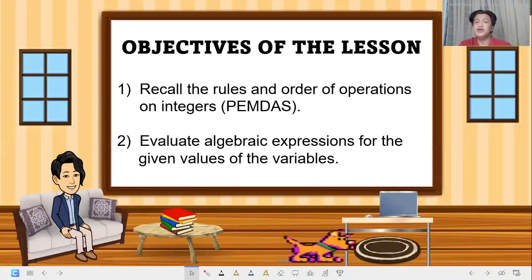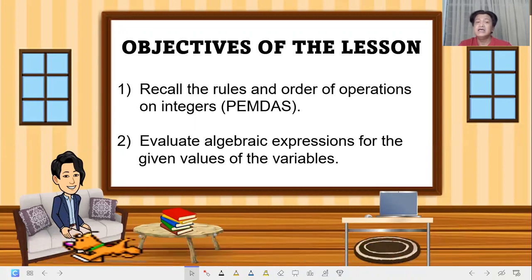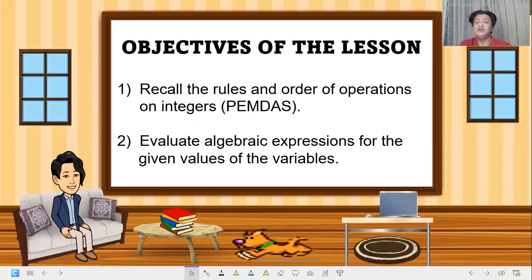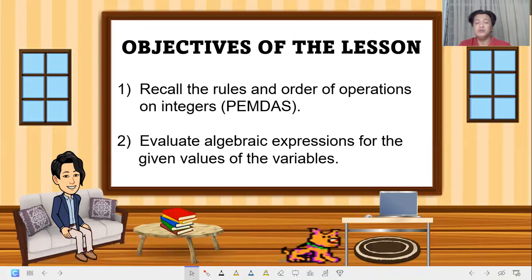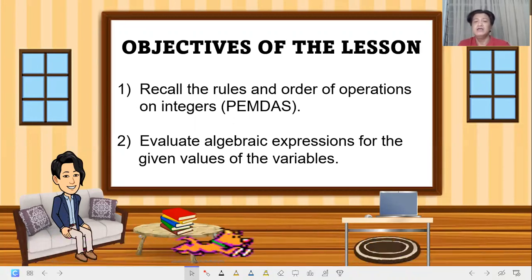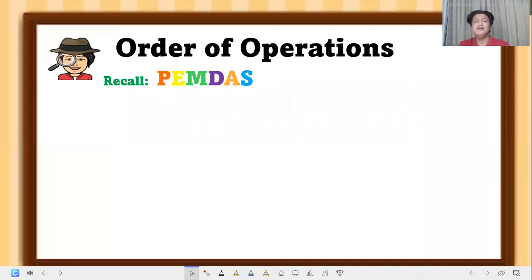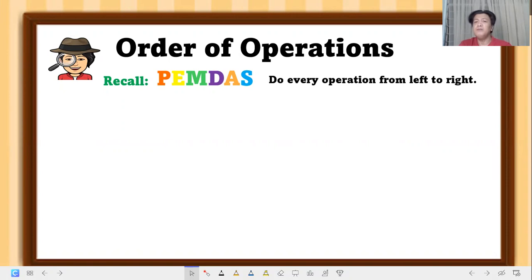Next, evaluate algebraic expressions for the given values of the variables. This is what we need to learn or master this week. With that, let's recall PEMDAS — a rule wherein you perform every operation from left to right.